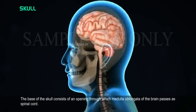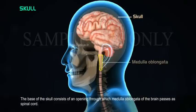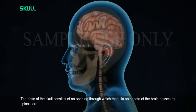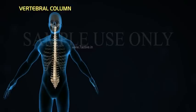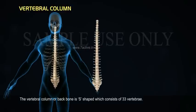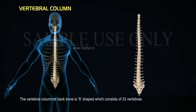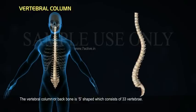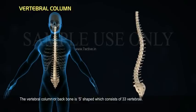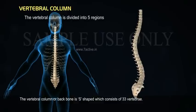The base of the skull consists of an opening through which the medulla oblongata of the brain passes into the spinal cord. Vertebral column. The vertebral column or backbone is S-shaped and consists of 33 vertebrae. The vertebral column is divided into five regions.